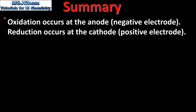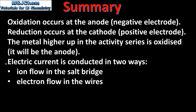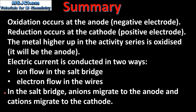To summarize: in a voltaic cell oxidation occurs at the anode, which is the negative electrode, and reduction occurs at the cathode, which is the positive electrode. The metal higher up in the activity series is oxidized and therefore will be the anode. In a voltaic cell the electric current is conducted in two ways: ion flow in the salt bridge and electron flow in the wires of the external circuit. In the salt bridge, anions migrate to the anode and cations migrate to the cathode, keeping both half cells electrically neutral and completing the circuit.